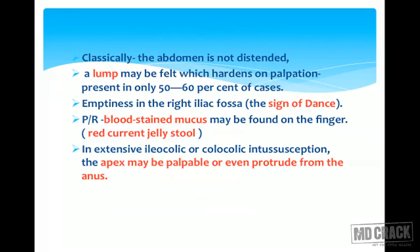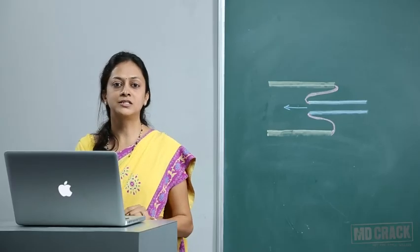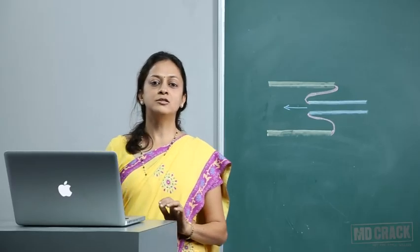Between episodes the child remains lethargic, and examination should be done between episodes. Classically the abdomen is not distended. A lump may be felt which hardens on palpation, present in only 50–60% of cases. Emptiness in the right iliac fossa is called the sign of Dance. On per rectal examination, blood-stained mucus will be seen.